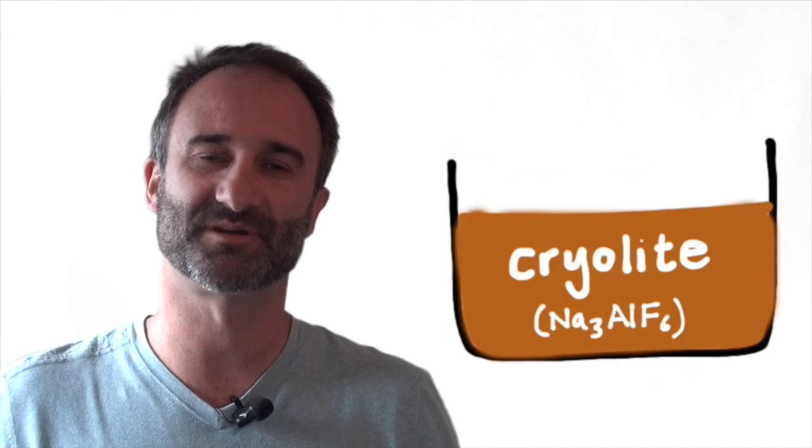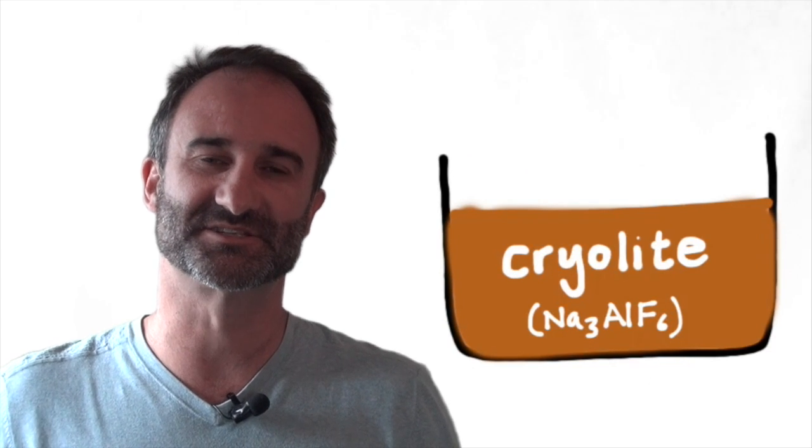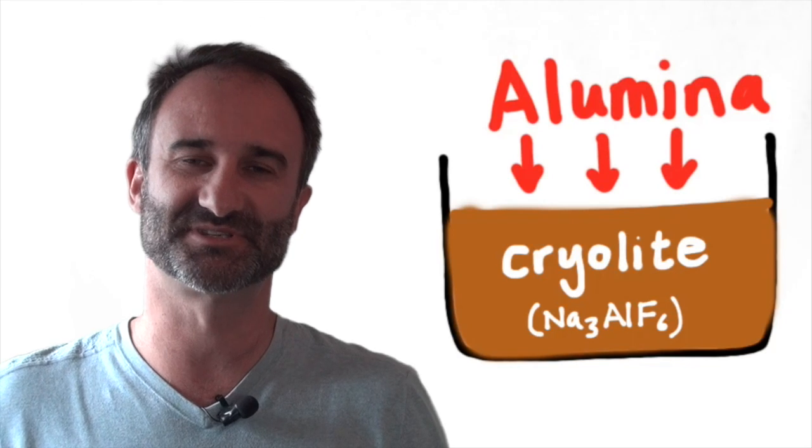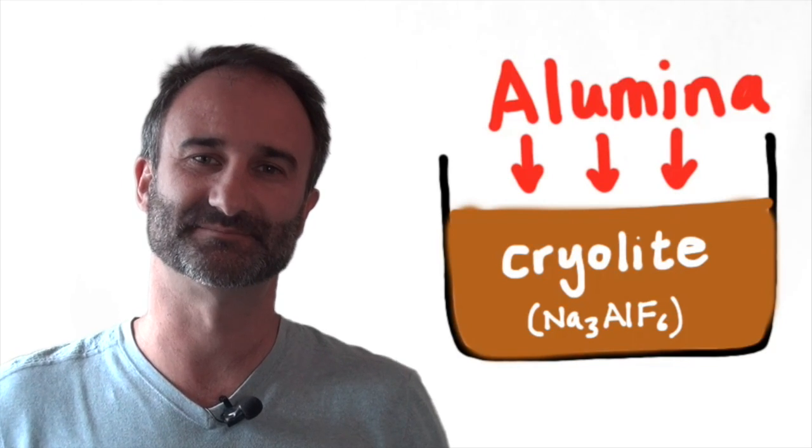To get around this problem the alumina is dissolved in molten cryolite and that allows the electrolysis to proceed at a much lower temperature. There is some really serious chemistry going on in those electrolytic cells but let's have a closer look at some of the simplified reactions taking place.